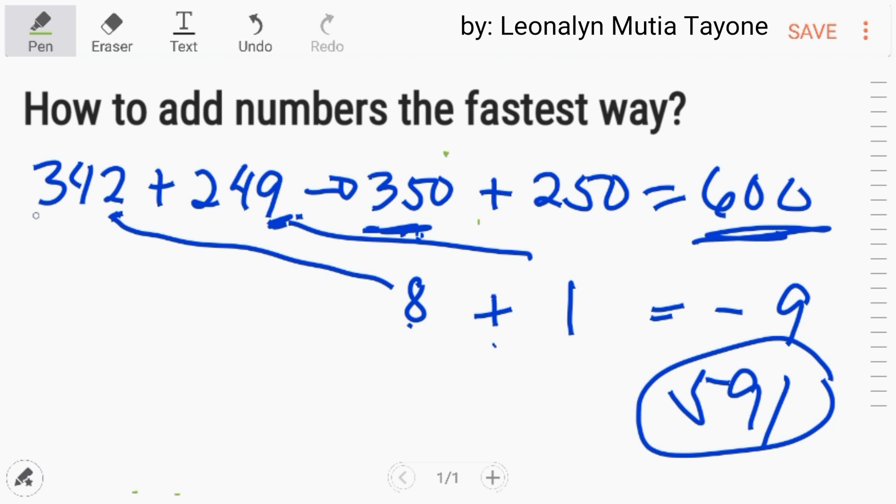Ulitin ko lang para mas klaro. Ito yung given. Ang ilagay mo lang sa mind is, mag-round up ka. Ang 342 mo magiging 350. Yung 249 mo magiging 250. Kung itong dalawa i-add mo, mas madali na siya. Kasi itong 5 plus 5, that is 10. Maglagay ka ng 1,600. Ma-solve mo na siya mentally. Paano naging 350? Isipin mo, ano yung paris ng ito? 8. Ano ang paris ng 9? 1. I-add mo si 8 plus 1 equals 9. Si 9, yan yung i-deduct mo sa 600. 600 minus 9, that is 591.